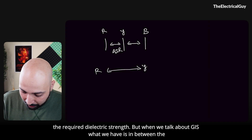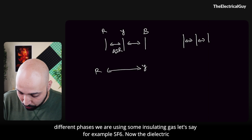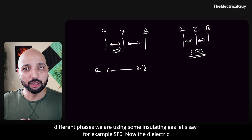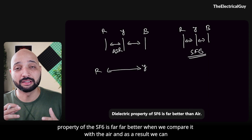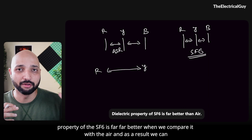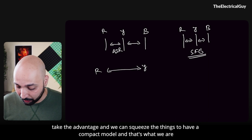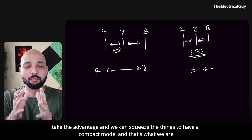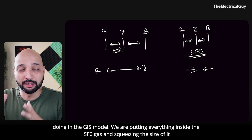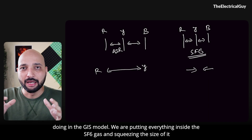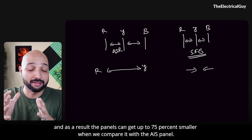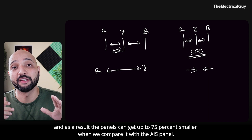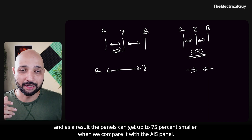When we talk about GIS, between the different phases we use an insulating gas — for example, SF6. The dielectric property of SF6 is far, far better when we compare it with air. As a result, we can take advantage of this and squeeze things to have a compact model. We put everything inside the SF6 gas, reducing the size, and the panels can get up to 75% smaller when compared with an AIS panel.